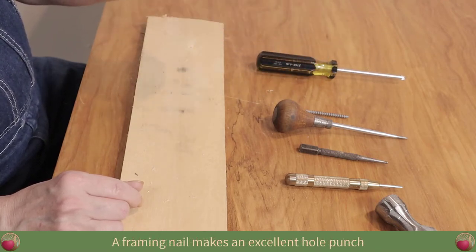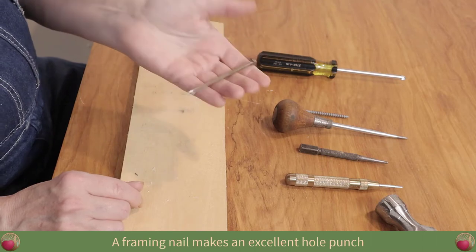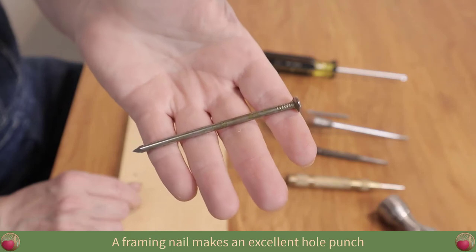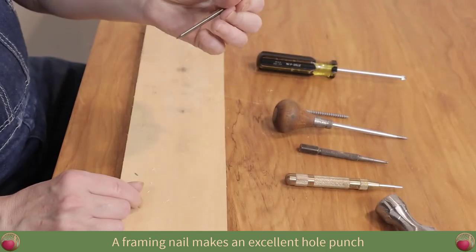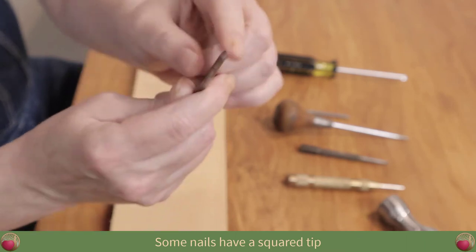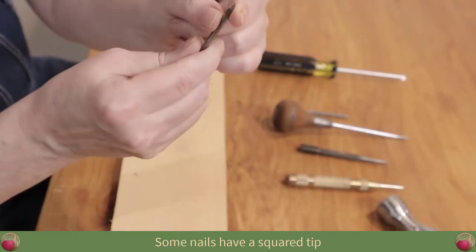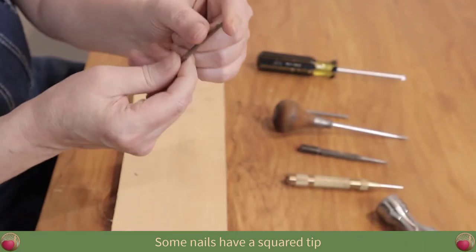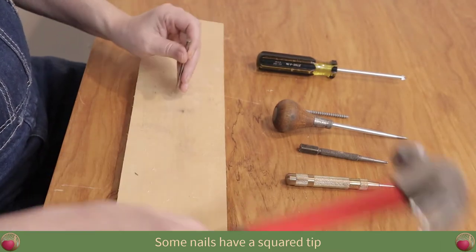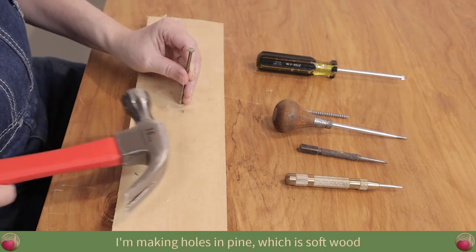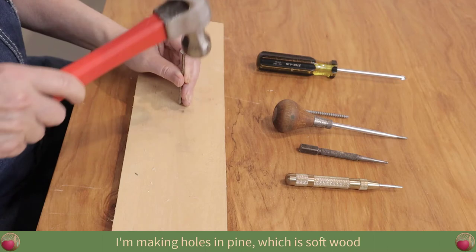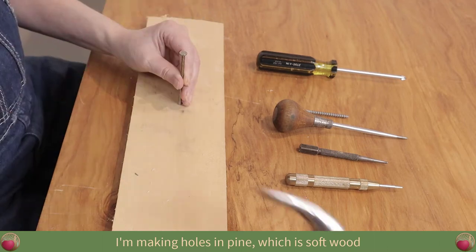Now, another tool that you may have around that's super cheap is a nail. And you want to get a pretty substantial nail for this. I'll hold it up so you can see a little better. A 10-penny nail or whatever. Now, some of these nails actually have four sides depending on the nails. They may or may not be round. But they're going to be sharp. And of course, they're meant to be banged on with a hammer. So let's do that. And I'm using a piece of pine that I pulled off a pallet, piece of scrap wood. So you really don't have to bang very hard to make a hole in that.